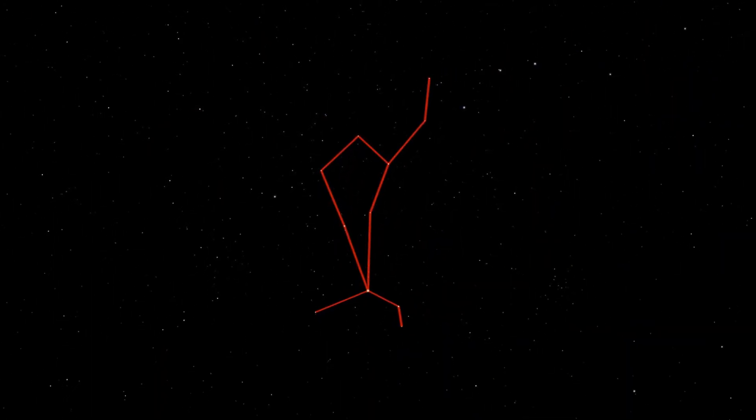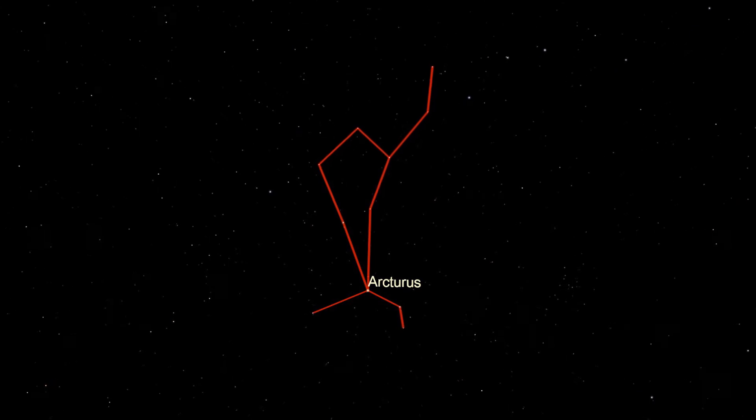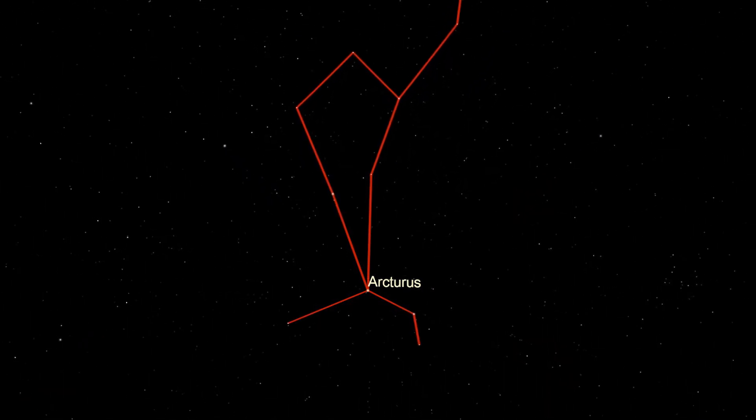Without a doubt, though, the star of the show in Boötes, pun intended, is Arcturus. Arcturus is rather close to Earth, about 37 light-years away, and at 7 billion years young, this star has been around for over half the life of the universe.